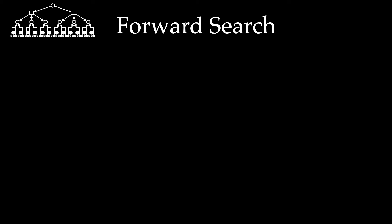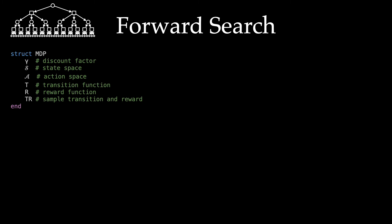Now looking at the code for the forward search algorithm in Julia, we first build the Markov decision process struct. The MDP is defined by the discount factor, state space, action space, transition function, reward function, and a tr function that allows us to sample from the transition and reward as we build up the tree. That's the basic problem definition we'll be working with.